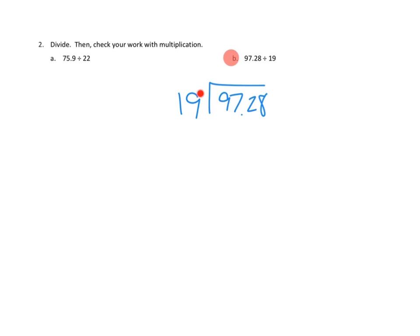I'm noticing this is very close to 20. And if it were 20 and 100, I'd be able to make 5 groups of 19, or 5 groups of 20 to make 100. I think that's going to work. Let me try that out. Let me try estimating 5 ones. 5 times 9 is 45. And 5 times 1 is 5, plus the 4 is 9. And sure enough, we used up 95 of our 97 ones, leaving us just 2 ones remaining.